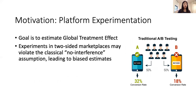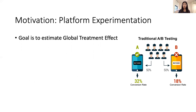The goal of the platform is to estimate the global treatment effect, which is the difference in some metric between a world where everyone sees this new feature and the world where no one sees this new feature. Typically, what platforms will do is randomize users into treatment and control. Treatment will receive this new feature, control will not. They'll estimate this global treatment effect by looking at the difference in the average behavior among these treatment and control groups. In most cases, this does give an unbiased estimate of the global treatment effect.